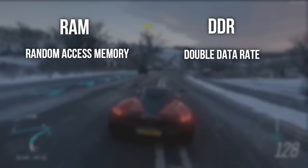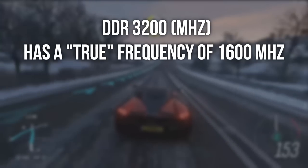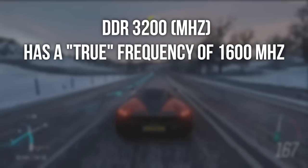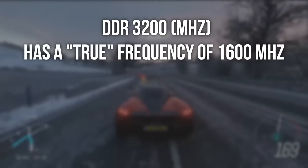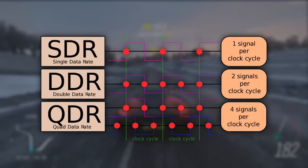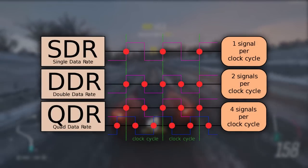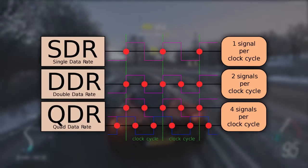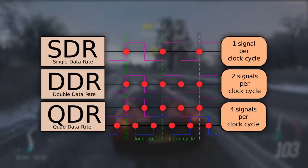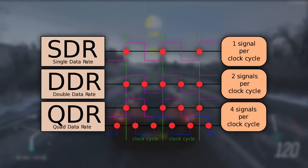RAM means Random Access Memory, and DDR means Double Data Rate. So DDR 3200 MHz will actually have a true frequency of 1600 MHz, but since it transfers data on both the rising and falling edges of the clock signal — having two transfers per clock cycle — it is considered 3200 MHz.